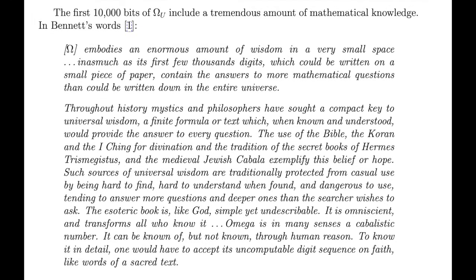Omega embodies an enormous amount of wisdom in a very small space. Inasmuch as the first few thousand digits, which could be written on a small piece of paper, contain the answers to more mathematical questions than could be written down in the entire universe. Throughout history, mystics and philosophers have sought a compact key to universal wisdom, a finite formula text which, when known and understood, would provide the answers to every question. The use of the Bible, the Koran, and the I Ching for divination, and the tradition of the secret books of Hermes Trismegistus and the medieval Jewish cabal exemplify this belief or hope.